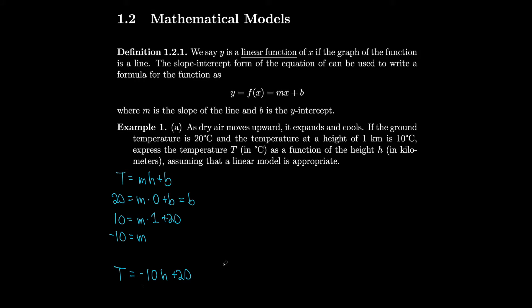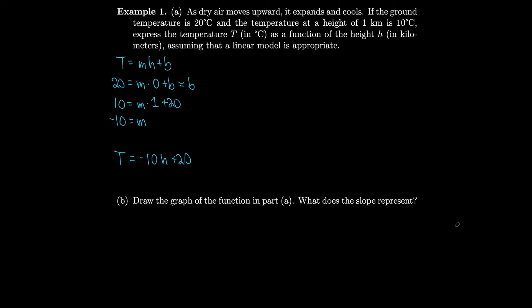Let's look at the second part: draw the graph of the function in part a — what does the slope represent? Let's get a T-axis and an h-axis. We have a y-intercept of 20, so we'll start at 20. And we know that when the temperature is 0, h should be 2, because then we have negative 20 plus 20 equals 0. So let's put 1, 2, and 3 on the h-axis.